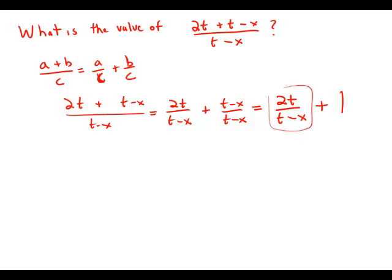And so if we knew the value of 2t over t minus x, we could simply add 1, and we'd get the value of the whole fraction.